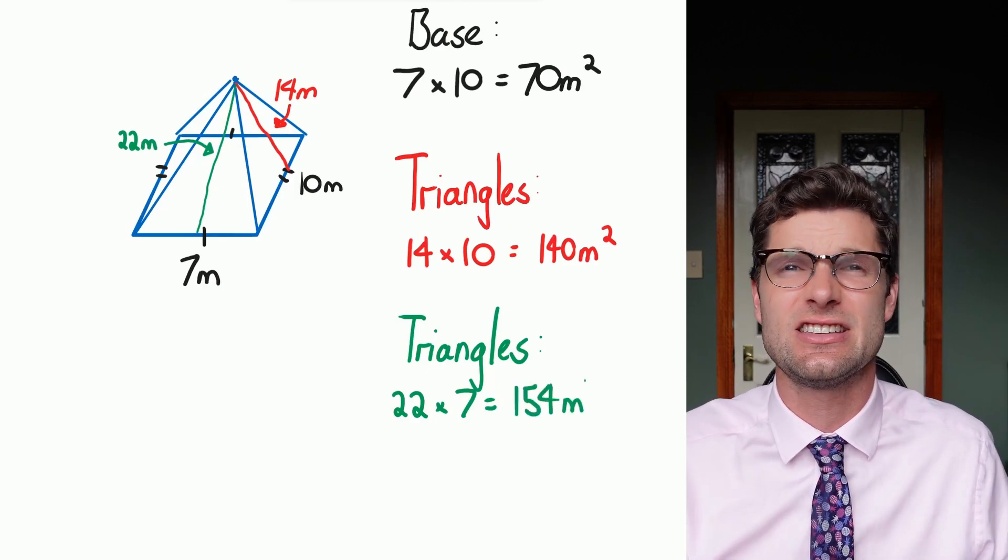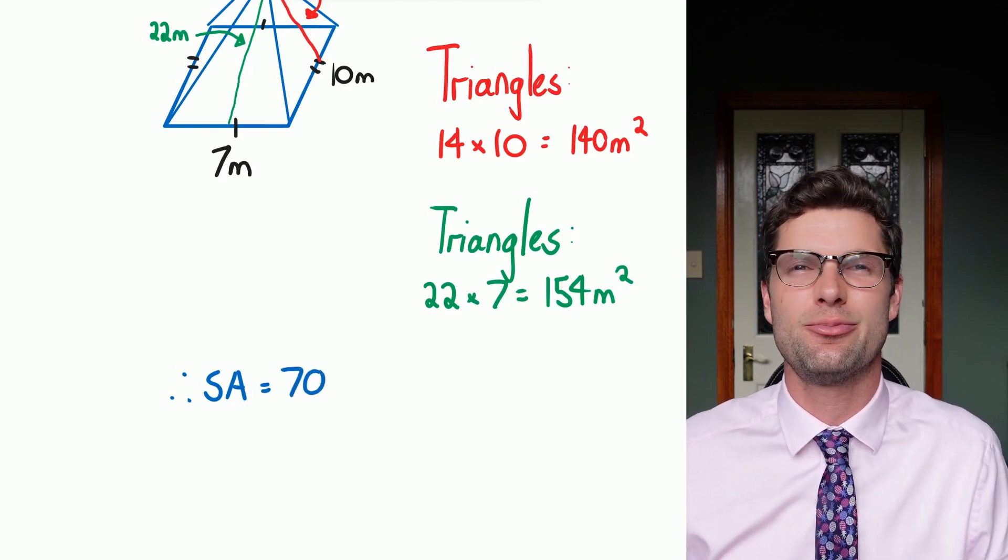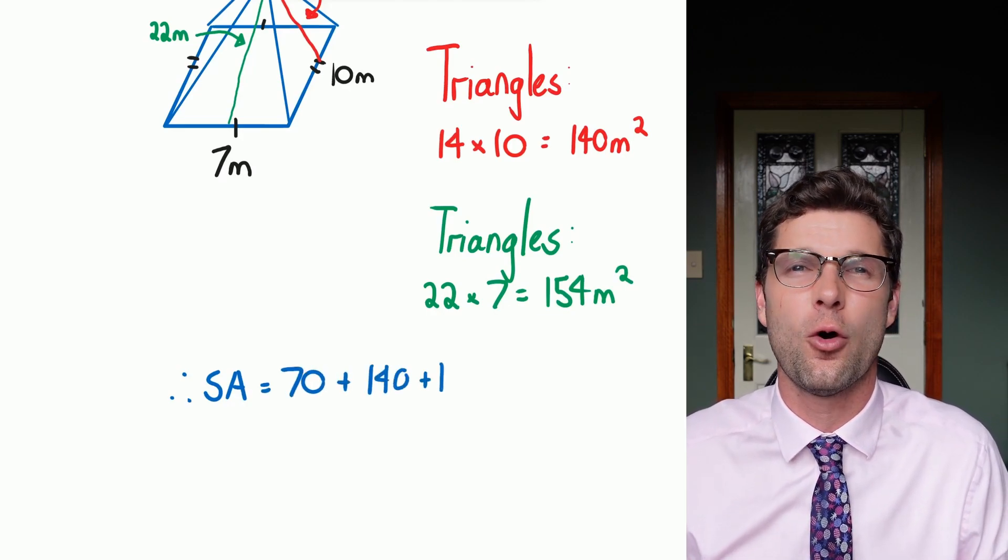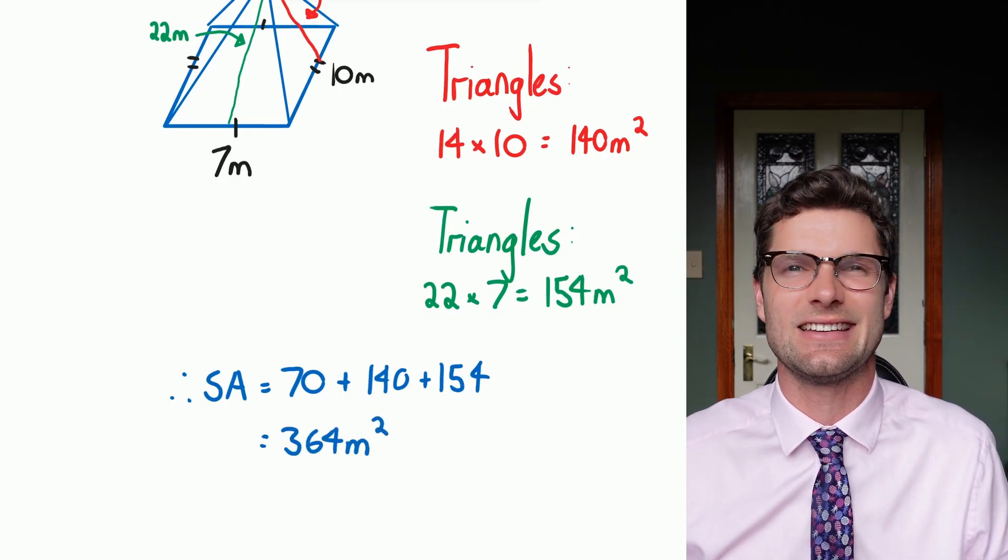Then to get my full mark I just have to add these three numbers together. So all I have to do to finish off is to go 70 plus 140 plus 154, which gives me the answer of 364 meters squared. That's done.